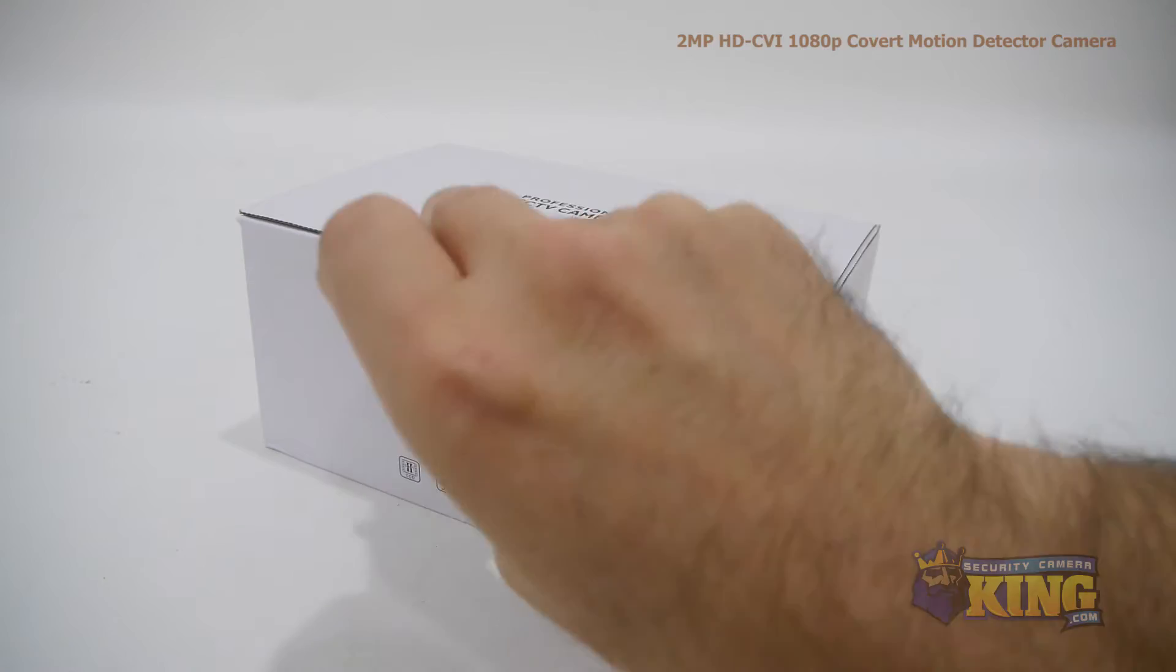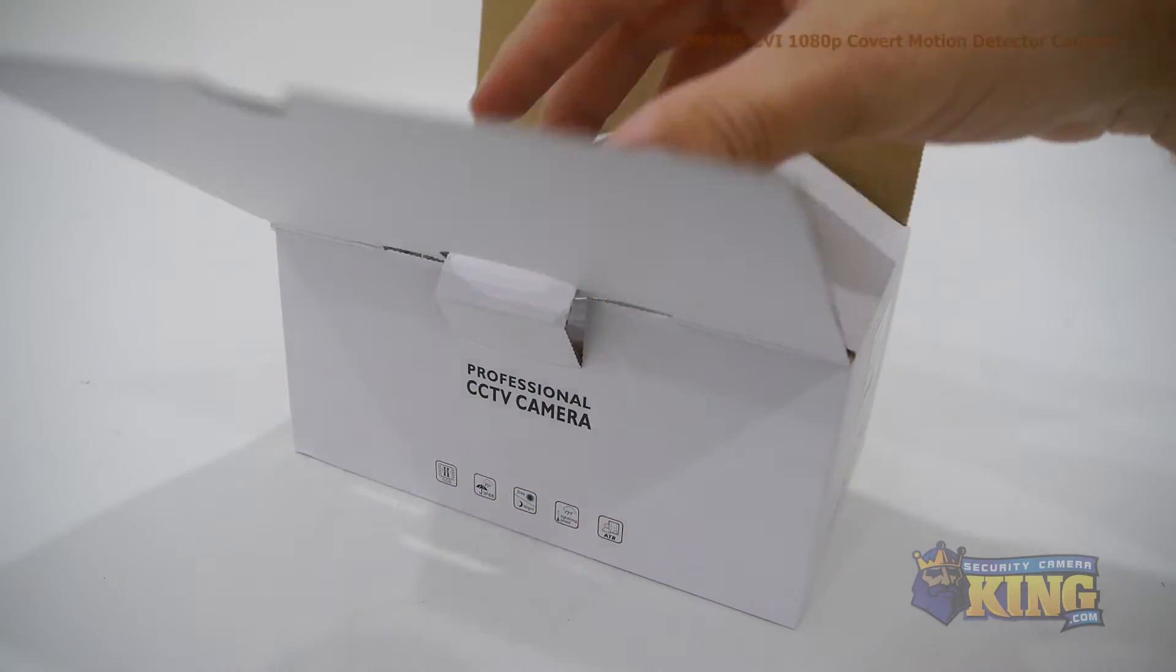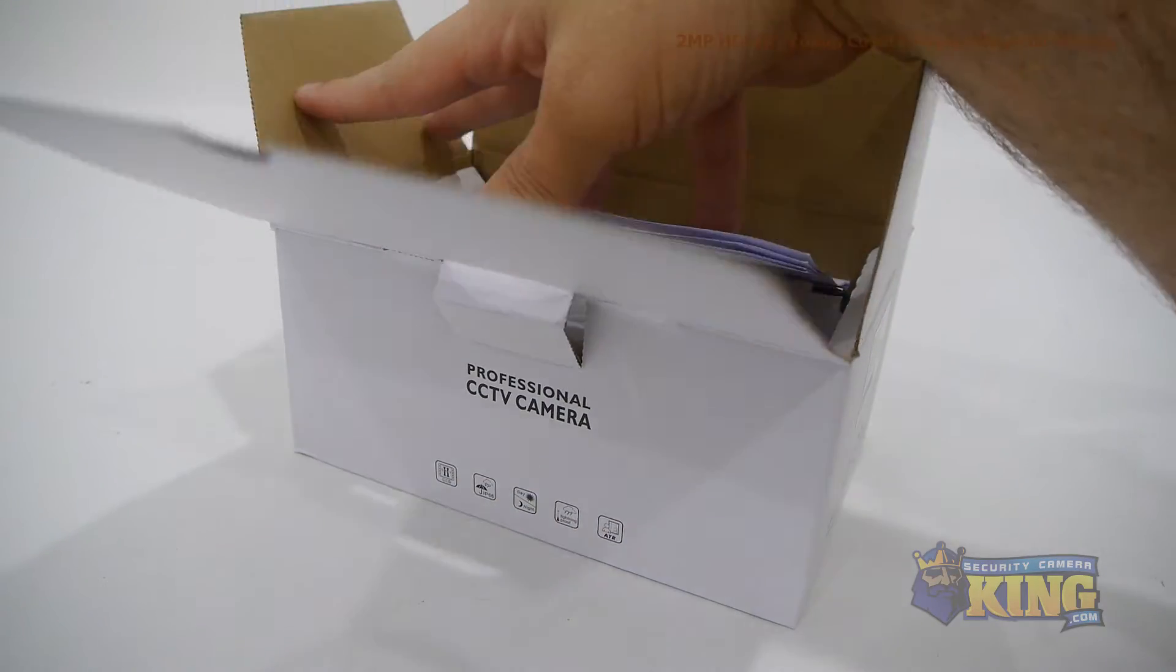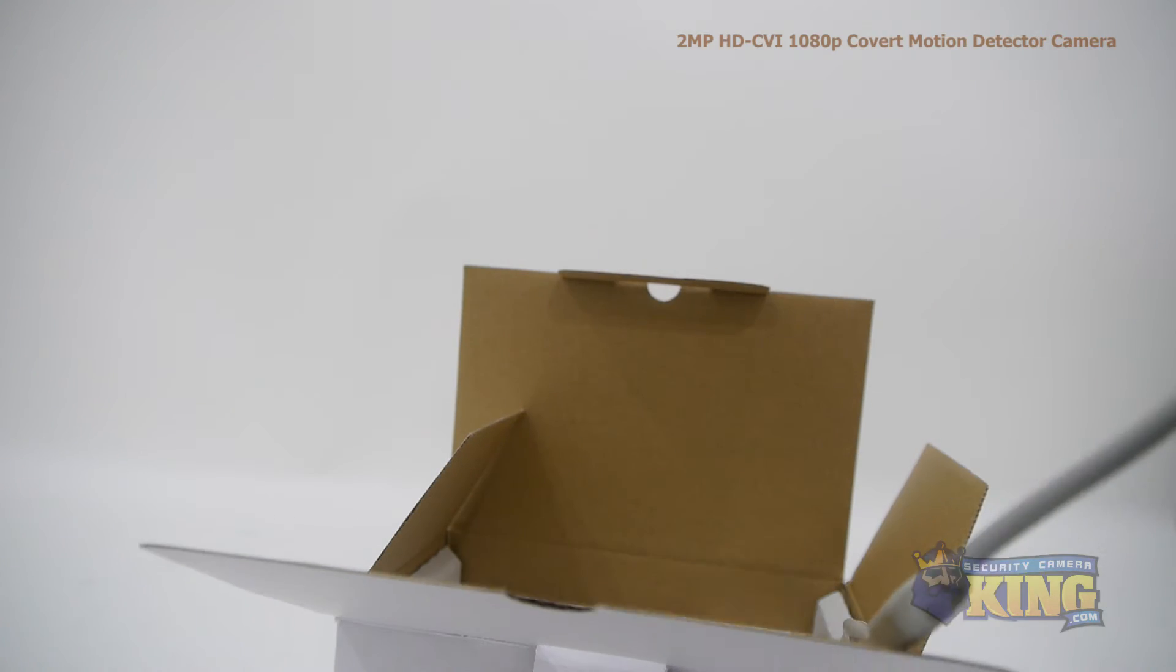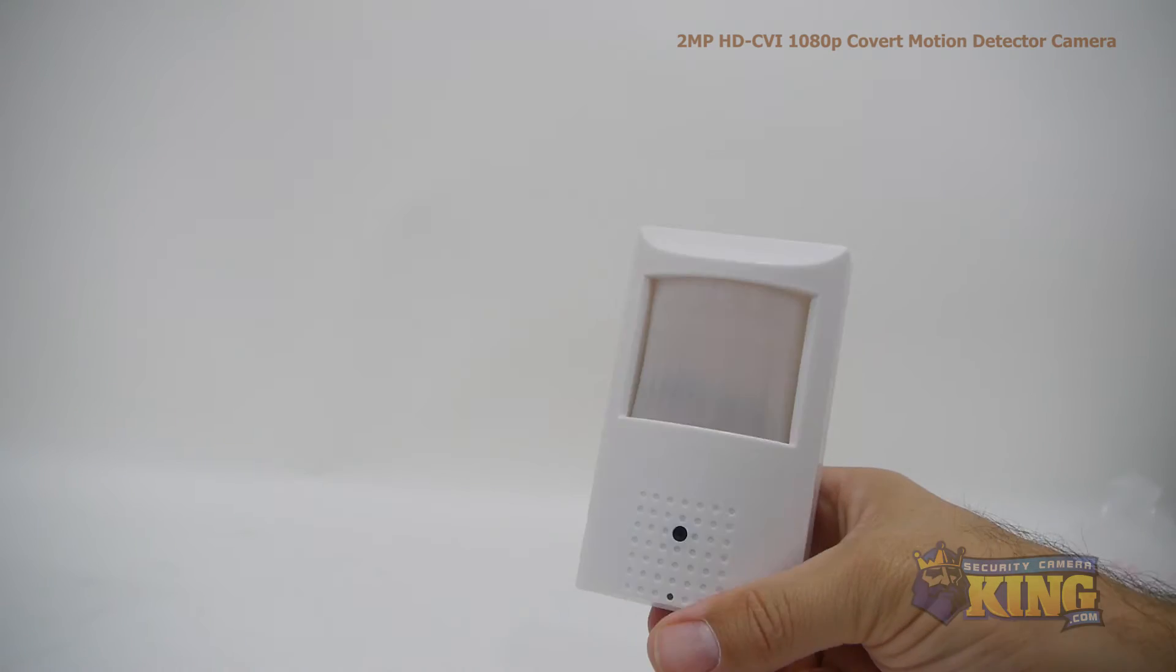This is our brand new covert hidden camera inside what looks like a PIR motion detector, but instead is actually a high-resolution HDCVI camera that works with standard coax cable that can record at 1080p true HD resolution.